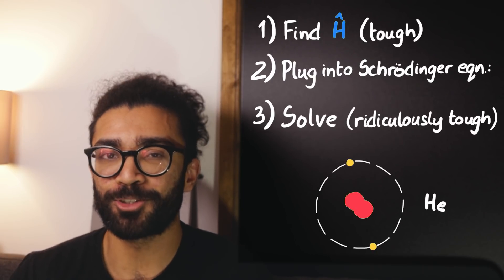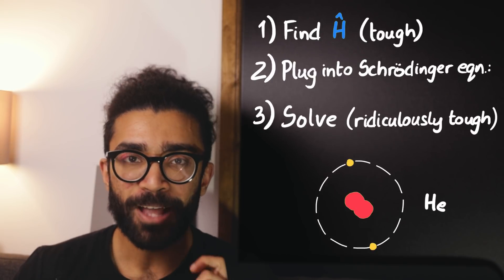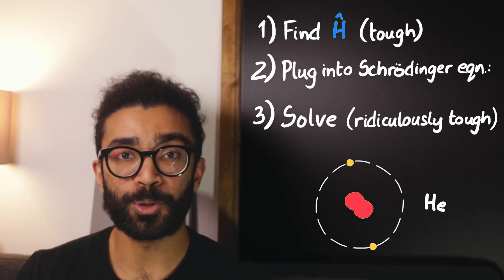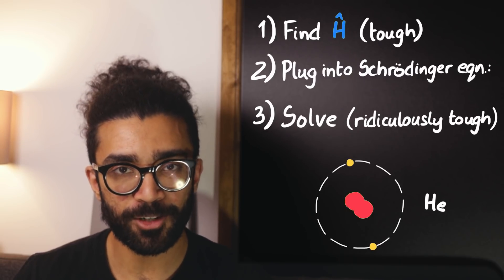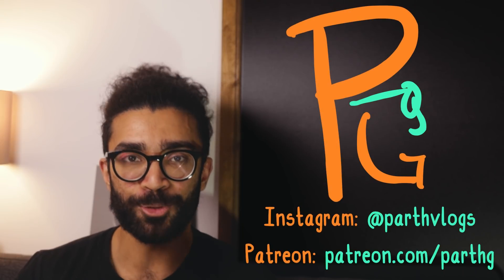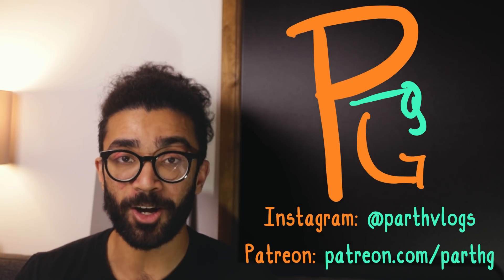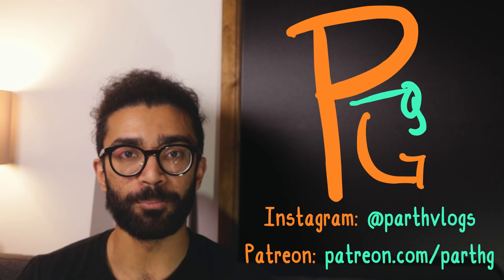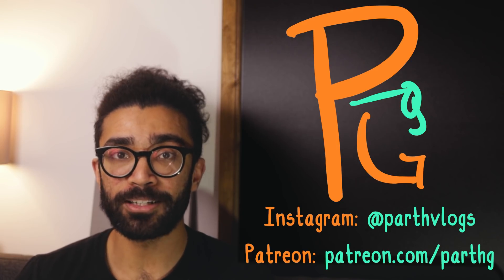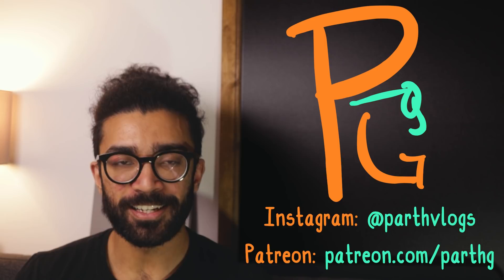I guess the point is, I hope this goes to show a couple of things. Firstly, how the Schrödinger equation is used to model stuff that we see in real life, such as the hydrogen atom, for example. And secondly, that it's quite tricky to do this at all. It gets harder and harder as we consider more and more complex atoms, but it's already quite difficult even for the simplest one. And with all of that being said, I'm going to finish up here.